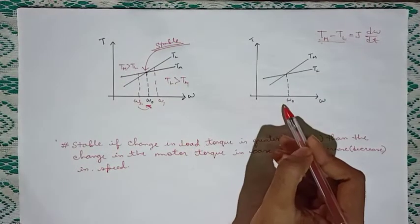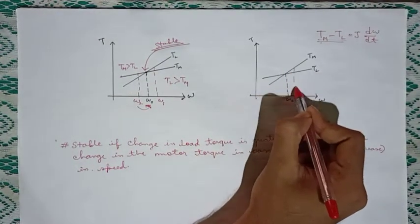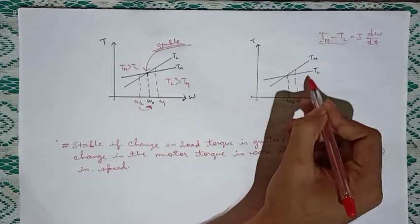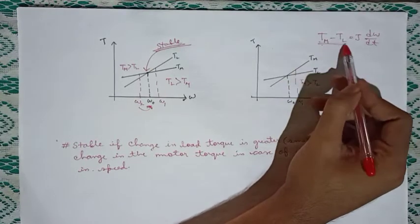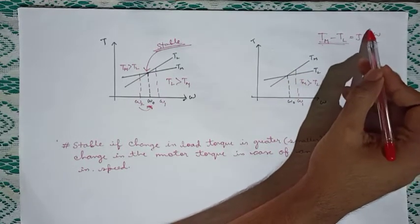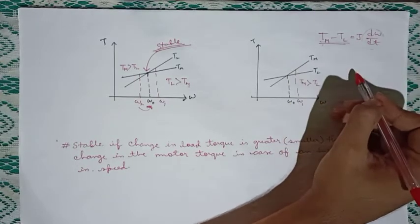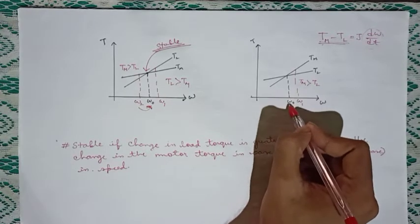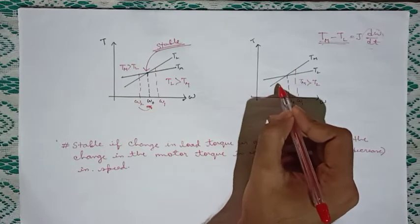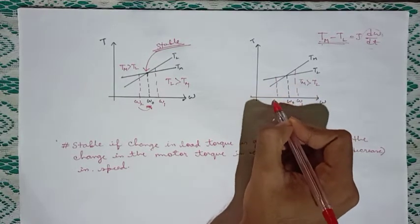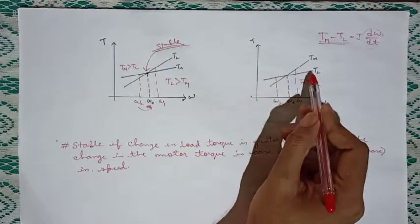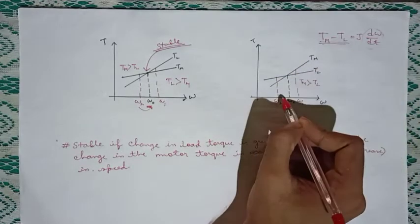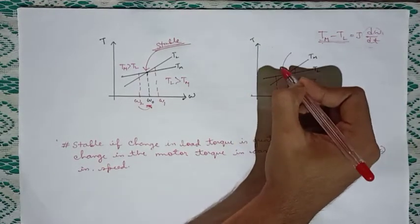Now let us see another case. If we increase the speed to omega_1, in this new position the machine torque is greater than the load torque, so this term is positive and the drive will accelerate, further increasing its speed. The drive will keep increasing speed and will never regain the original equilibrium position. Similarly, if the speed decreases to omega_2, the load torque is greater than the machine torque, so the drive will decelerate and eventually come to a halt. Therefore this equilibrium point is unstable equilibrium.